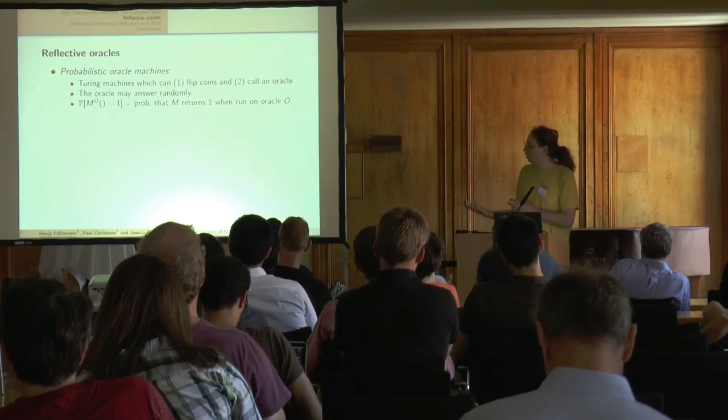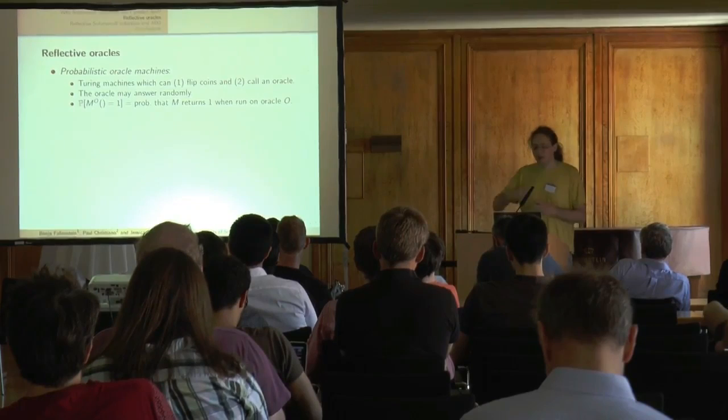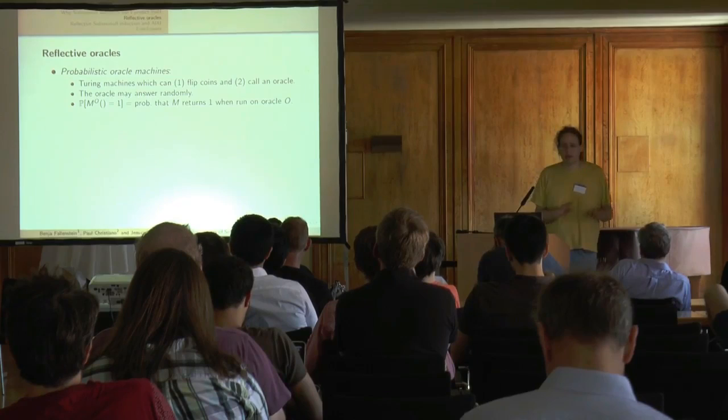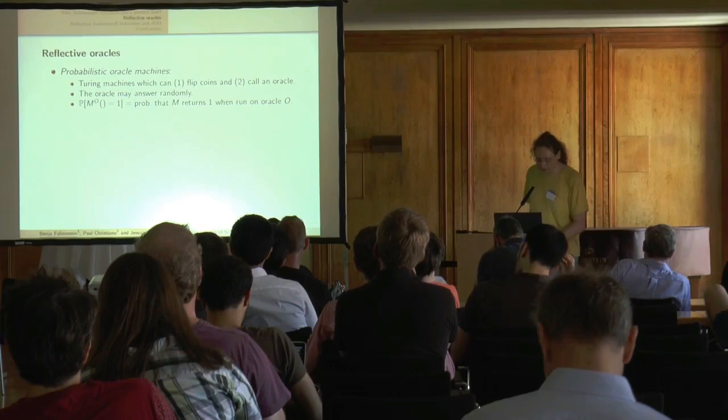I'll write M^O = 1 to say that machine M, when run with Oracle O, returns 1. Then P of that is the probability given the coin flips that the program makes and the calls to the Oracle. The next two slides are a bit technical — I want to give an impression of what's happening at a technical level, but if it's a bit impressionistic, that's fine; see the paper for details.